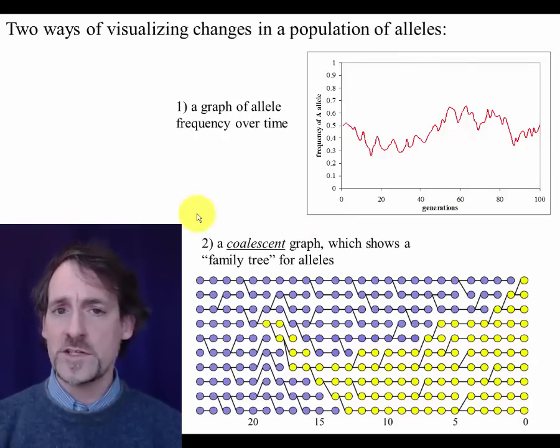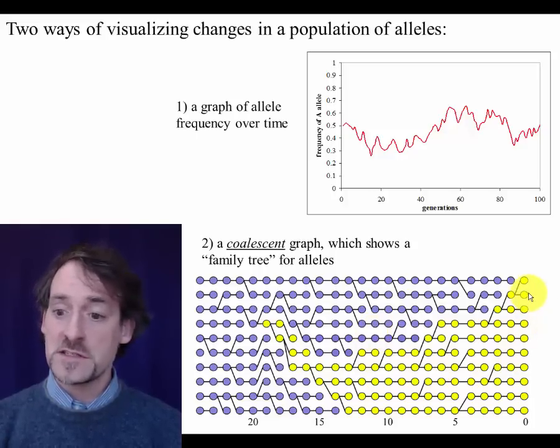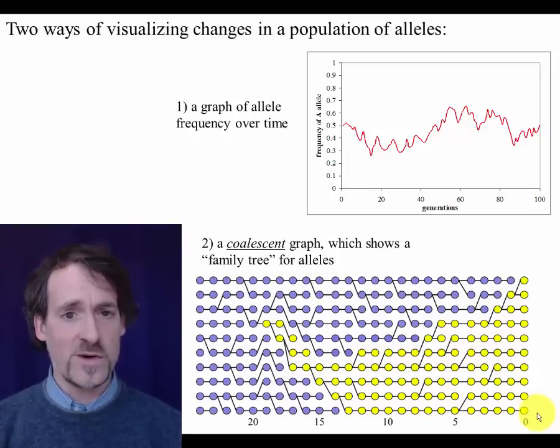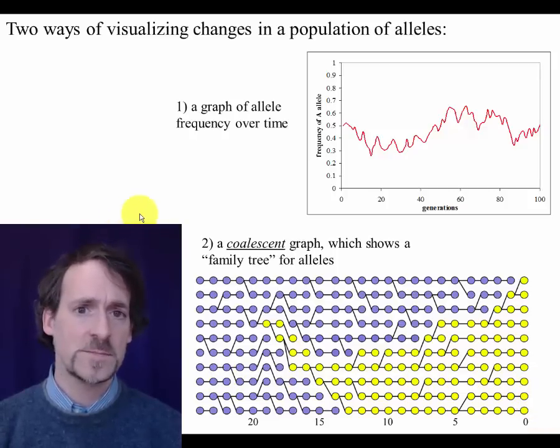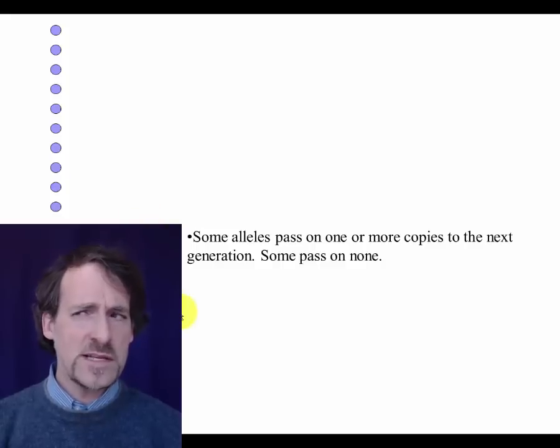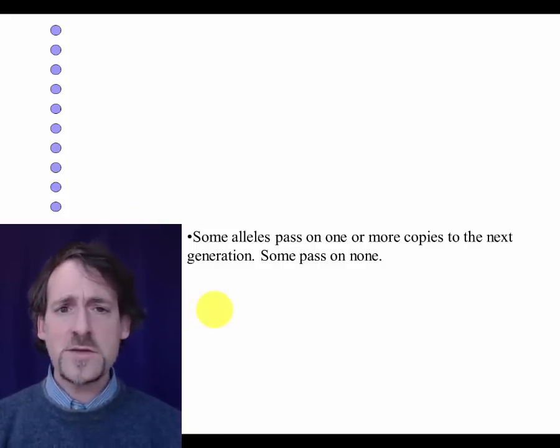Another way that you can visualize genetic drift is with what's called a coalescent graph. This is essentially a family tree of alleles starting at the present day, oddly, on the right and going back into the past on the left. The coalescent graph may need a little bit more explanation.